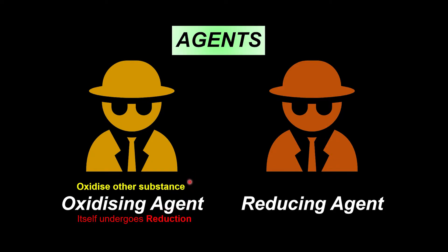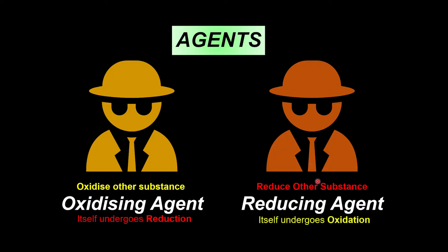So the oxidizing agent causes the other substance to lose electrons, and itself gains the electrons. Now we have the reducing agent. It is going to help us to reduce other substances — meaning it will cause the other substance to undergo reduction, which means gaining electrons. But itself, it undergoes oxidation, meaning it loses electrons.